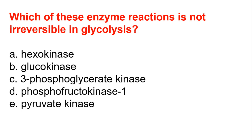The enzyme which is not irreversible in glycolysis — the answer is C, which is 3-phosphoglycerate kinase.